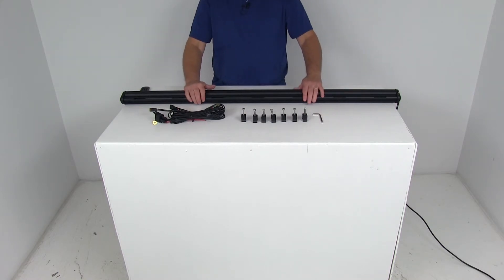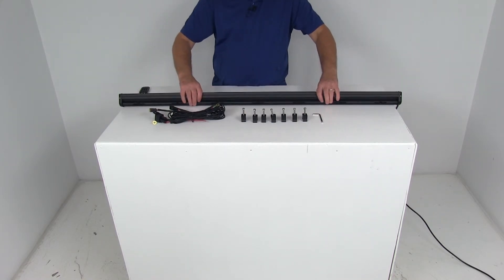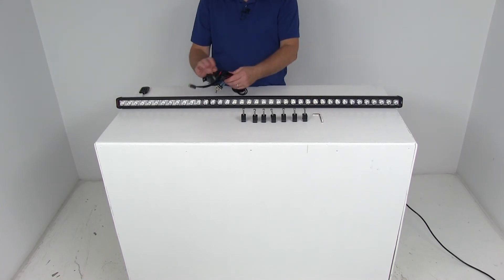Now this wiring harness right here does have the toggle switch right here for on and off. It does have the 12 volt relays, some inline 30 amp fuses. All the wire in this is a 14 gauge wire. And the actual toggle switch has a wire that's about 10 foot long, so you can locate the switch wherever you'd like.